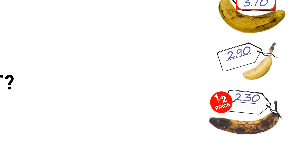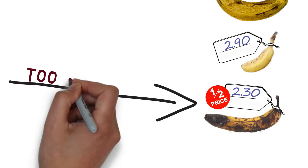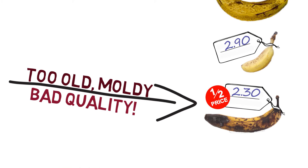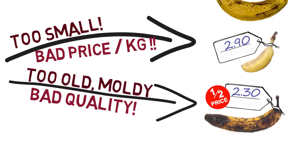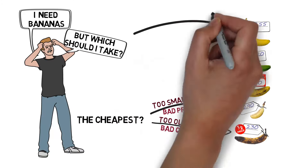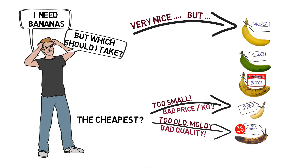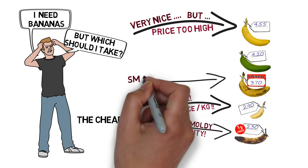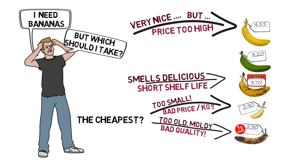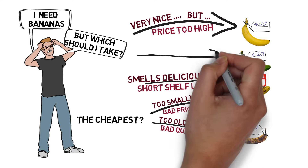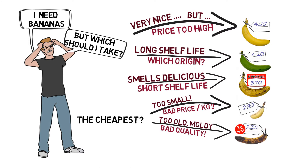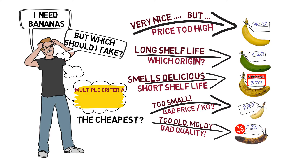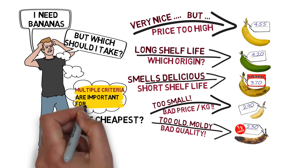The cheapest? But look at those in more detail — these are too old, they're bad quality. The other cheap ones are too small, and actually they're not that cheap at all. The yellow ones look perfect, but they cost a lot of money. One smells delicious and comes at a special price, but we must eat it immediately. The green ones we can keep for a long time, but the taste is uncertain. There are so many criteria to consider, and there seem to be trade-offs between these choices.